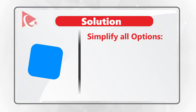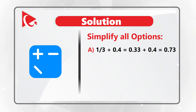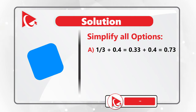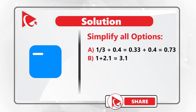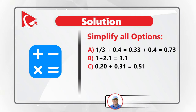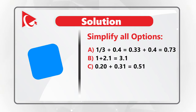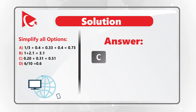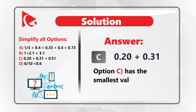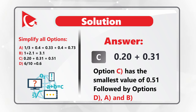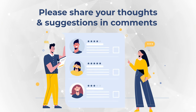The tricky part is that the question is designed to make you do mental math. To get to the final answer, you need to simplify all the options. Option A: 1 third plus 0.4 equals 0.33 plus 0.4, which is 0.73. Choice B: 1 plus 2.1 equals 3.1. Choice C: 0.20 plus 0.31 equals 0.51. And Choice D: 6 tenths equals 0.6. Option C has the smallest value of 0.51, followed by option D, A, and B. Was it challenging for you? Please share your thoughts in comments.